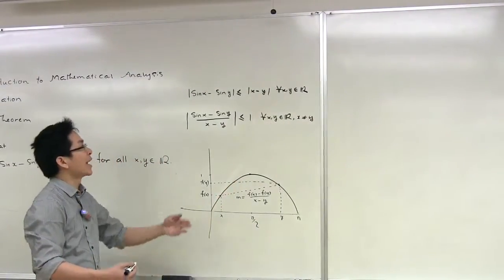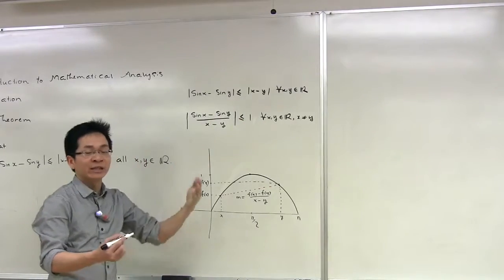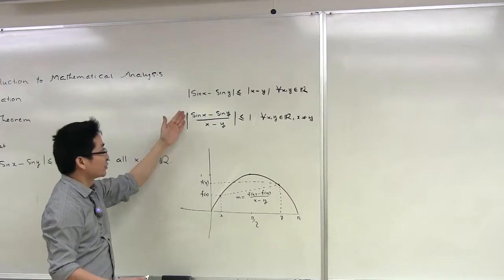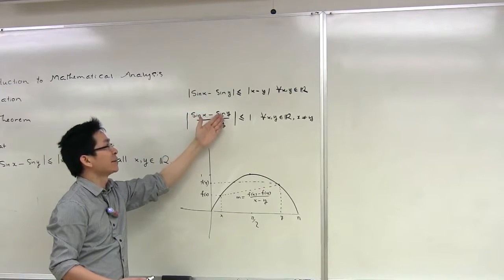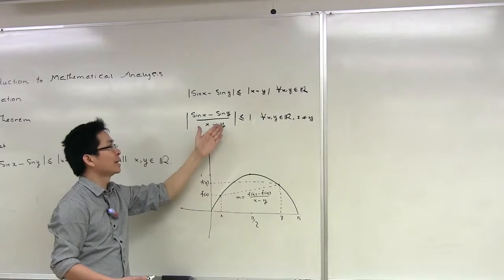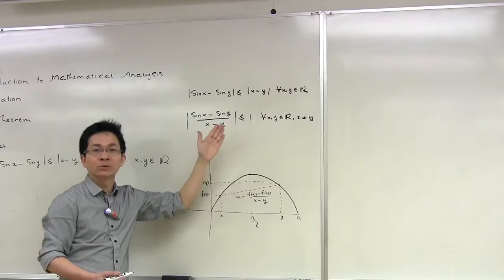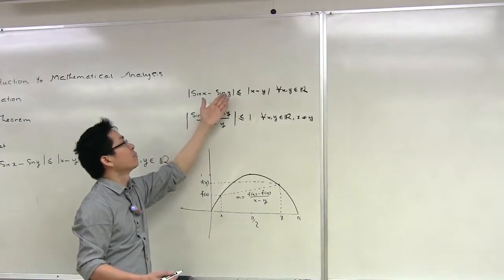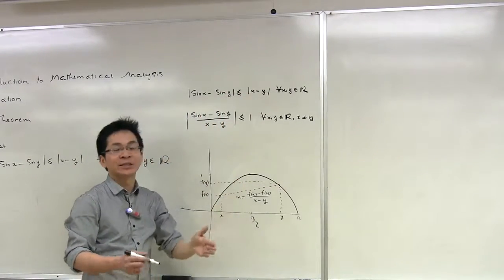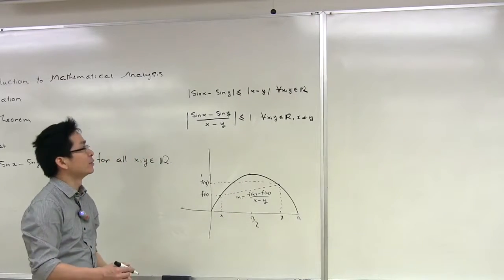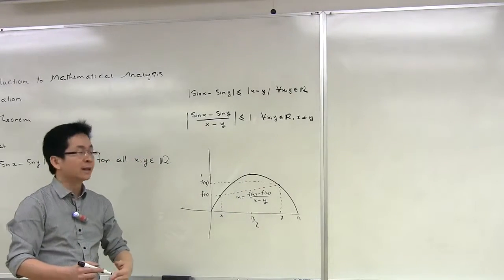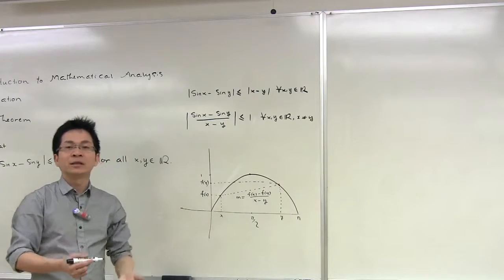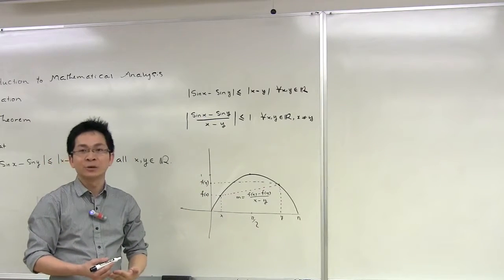Note that in the case where x is not equal to y, the given inequality can be written as follows: the absolute value of sin(x) minus sin(y) over x minus y is less than or equal to 1. We obtain this by dividing both sides of the inequality by the absolute value of x minus y. So this reminds us of the use of the mean value theorem.